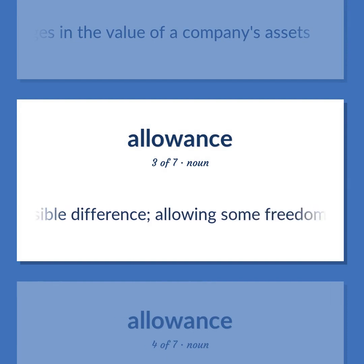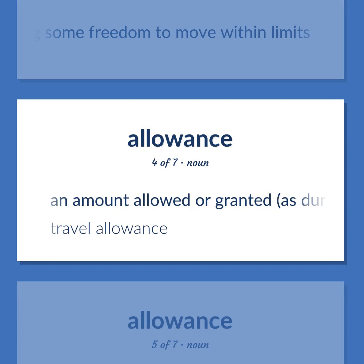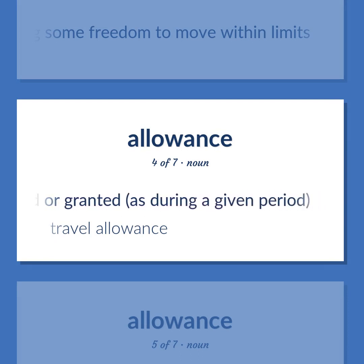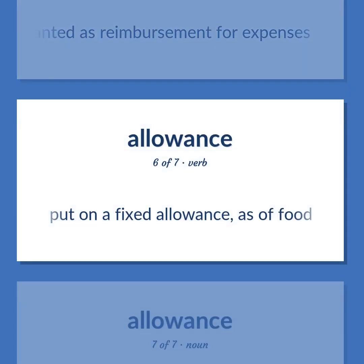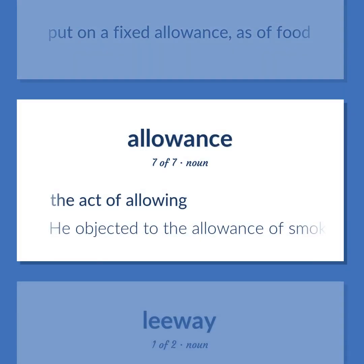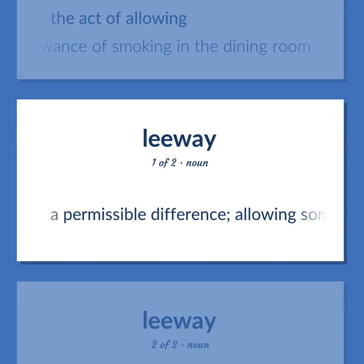A permissible difference, allowing some freedom to move within limits. An amount allowed or granted, as during a given period — travel allowance. A sum granted as reimbursement for expenses. Put on a fixed allowance, as of food. The act of allowing — he objected to the allowance of smoking in the dining room. A permissible difference, allowing some freedom to move within limits.